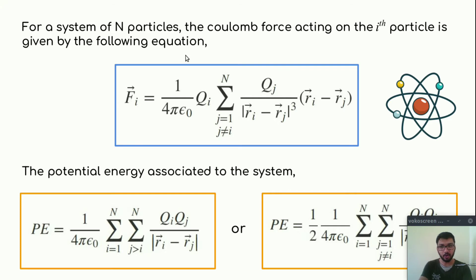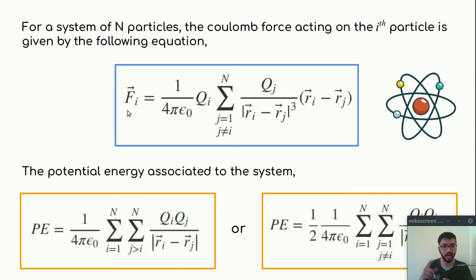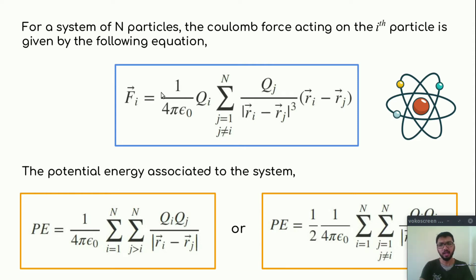This is the theory for Coulomb force. For a system of n particles, the Coulomb force acting on the ith particle is given by this equation. Here fi is the force acting on the ith particle, qi is the charge of the ith particle, and small r is the distance from the origin. I am assuming that the constant is equal to 1, as I mentioned in my previous video — I will take all constants to unity.